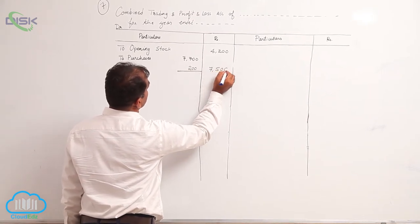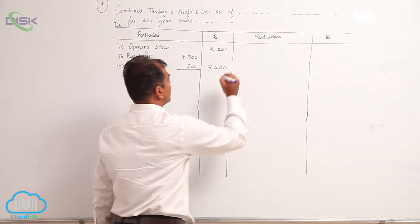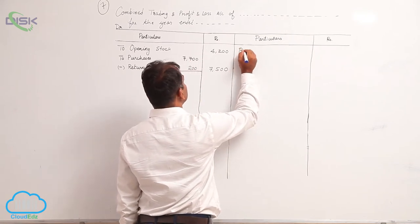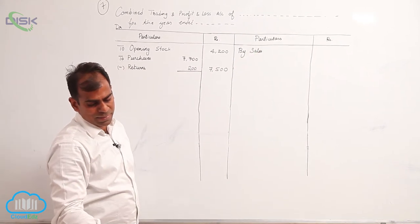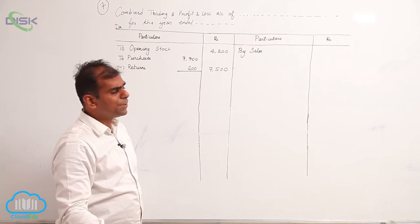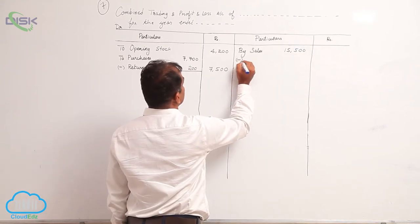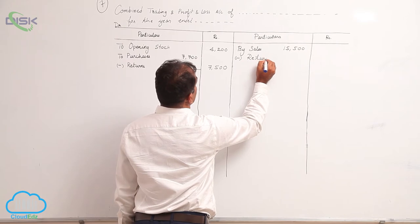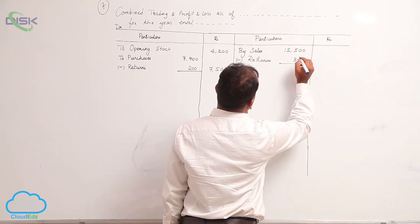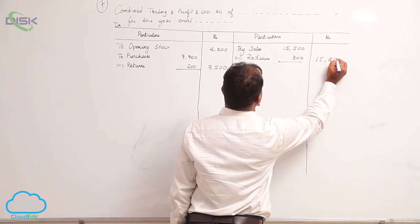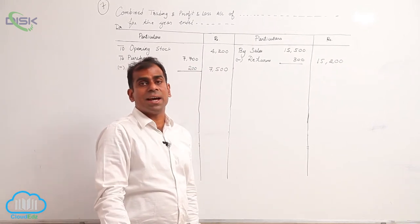The next item is sales, which goes on the credit side. Write sales in the inner column — 15500 — then deduct sales returns of 300, giving net sales of 15200 in the outer column.